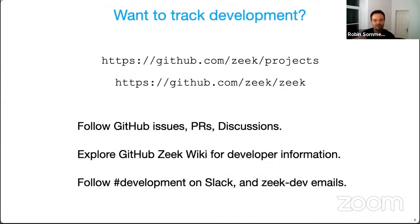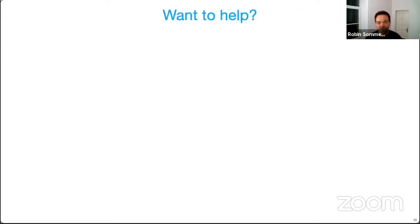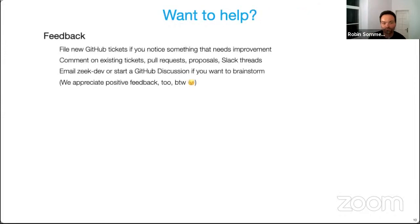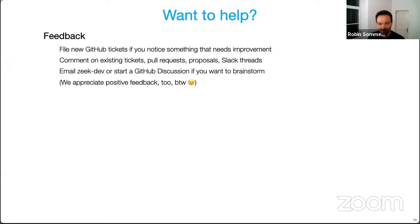If you want to track development, GitHub is our hub for everything going on. We have projects set up for the various milestones. The Zeek repository is the main one where you find most activity — follow the issues, follow the PRs, discussions. Look at the wiki for development information and the development channel on Slack. Feedback is immensely valuable and always appreciated. If you notice something that needs improvement, file tickets. Comment on stuff that is out there already — tickets, pull requests, proposals, Slack threads, email our development list, start a GitHub discussion. If you really like something in a new version, let us know so we know we're on the right track. If you hate it, let us know too.